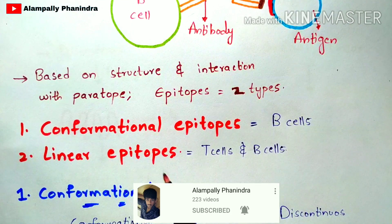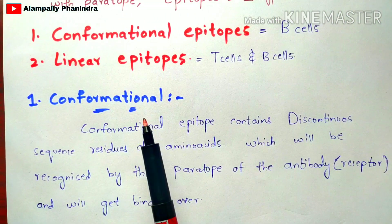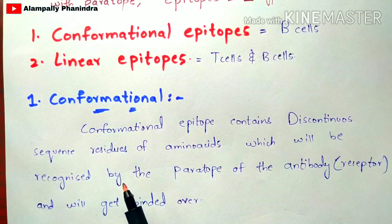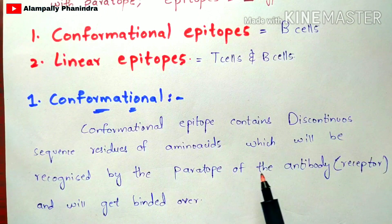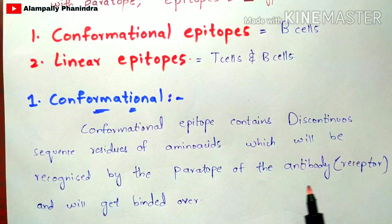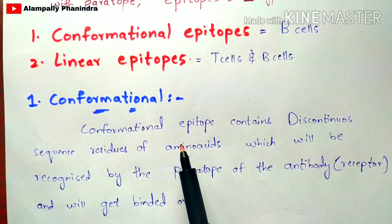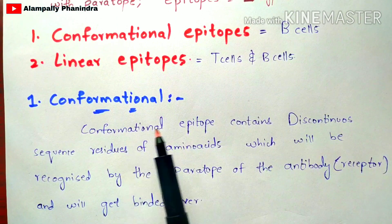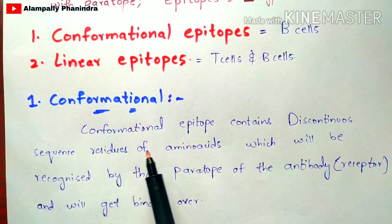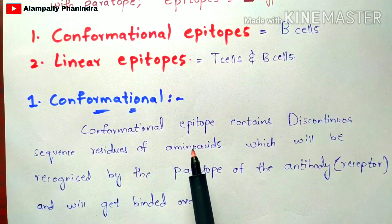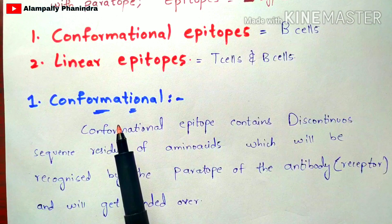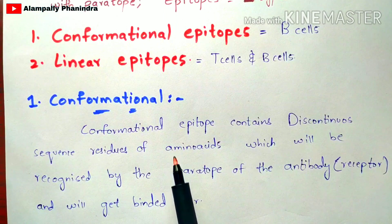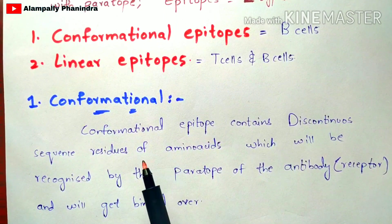Conformational epitopes contain a discontinuous sequence of amino acid residues which are recognized by the paratope of the antibody. Technically, this paratope is called a receptor and binds to the antibody. The most important thing to remember about conformational epitopes is that they contain a discontinuous sequence of amino acids.